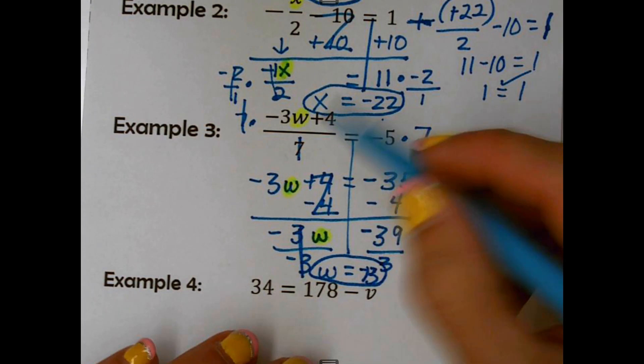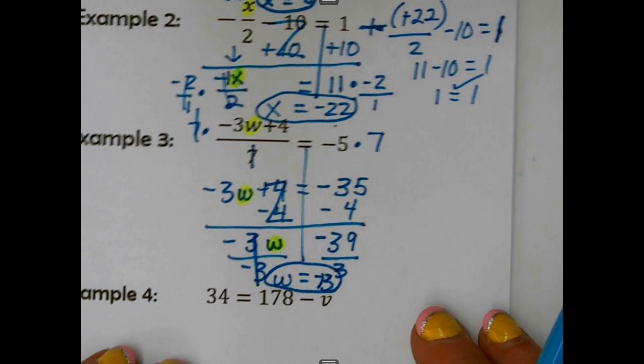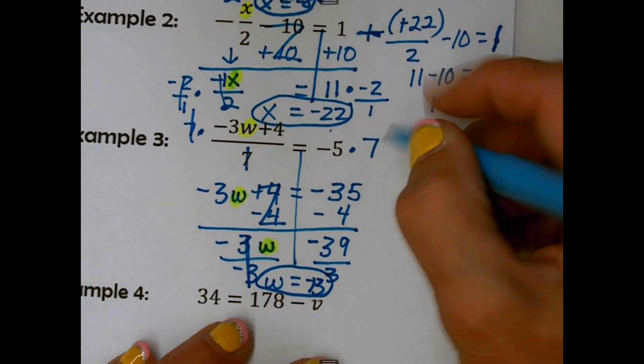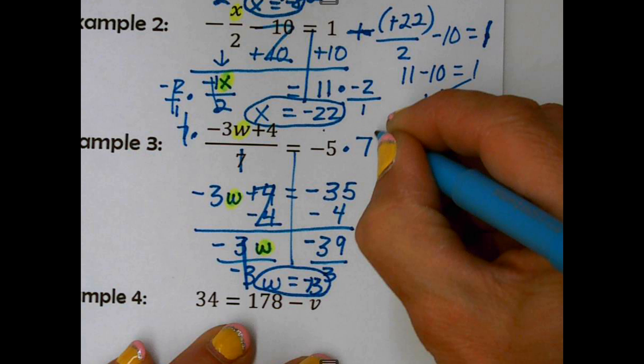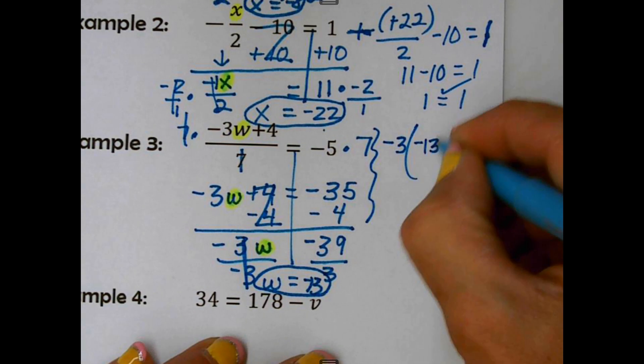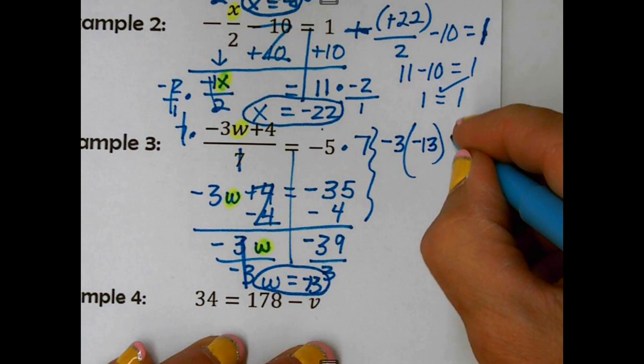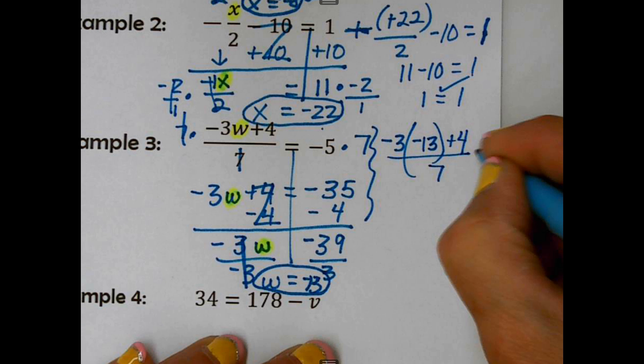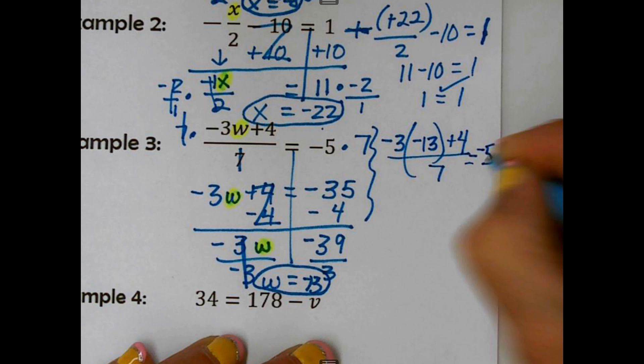Negative 13 was my solution. That goes in the highlight. I'm substituting in. Order of operations. I'm going to go ahead and simplify that numerator. Negative 3 times negative 13 is 39.